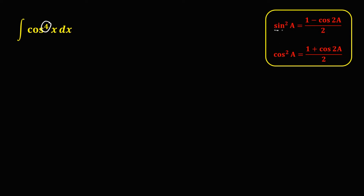For sine squared a, that's 1 minus cosine 2a over 2. And for cosine squared a, that's 1 plus cosine 2a over 2. For this given, since the identity involves cosine squared, we need to rewrite this expression first as cosine squared.